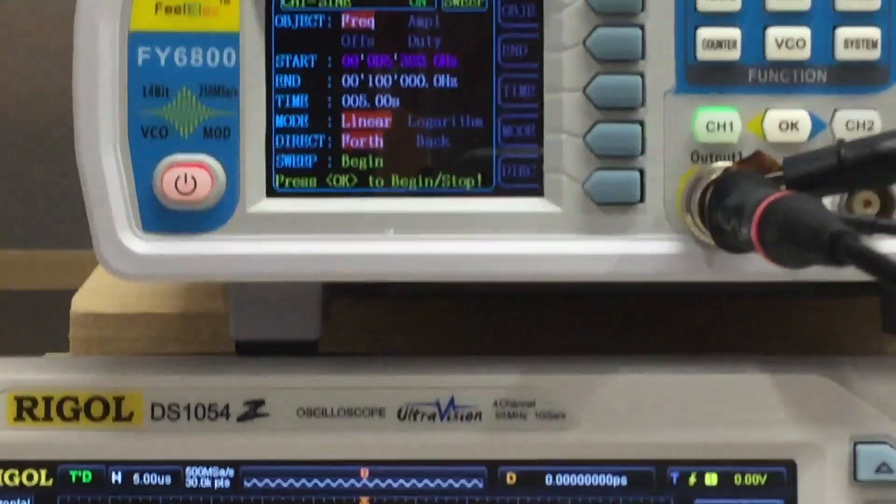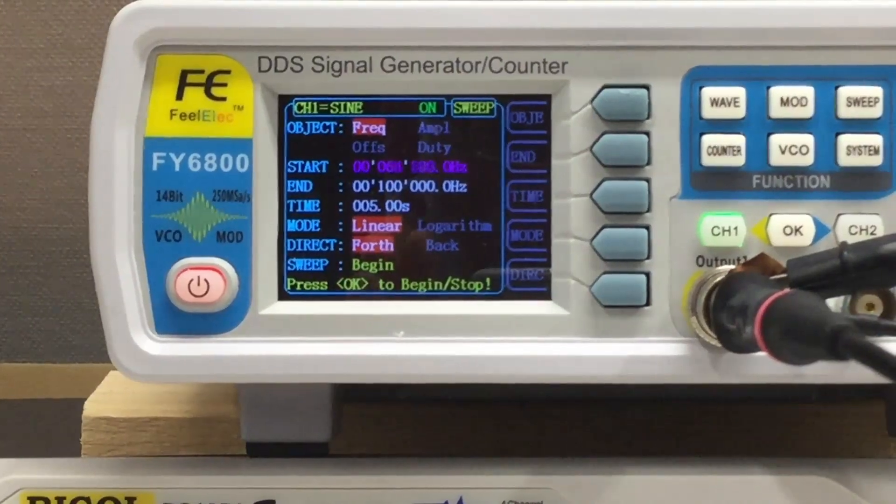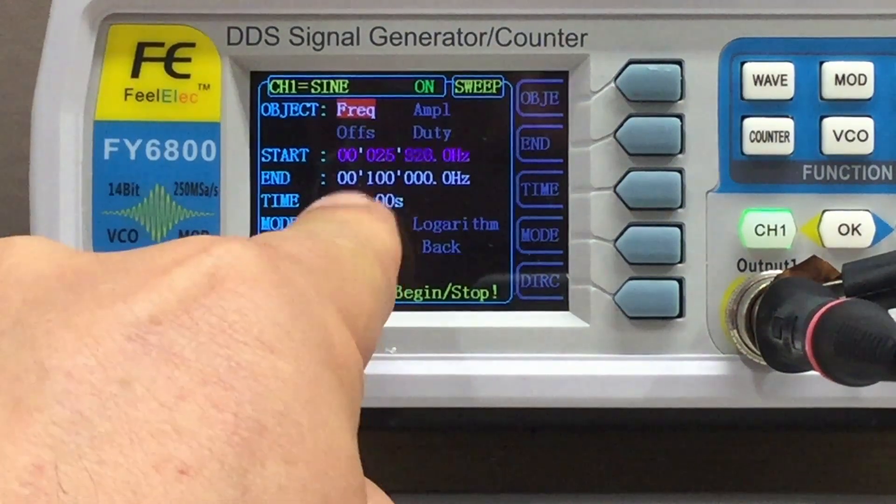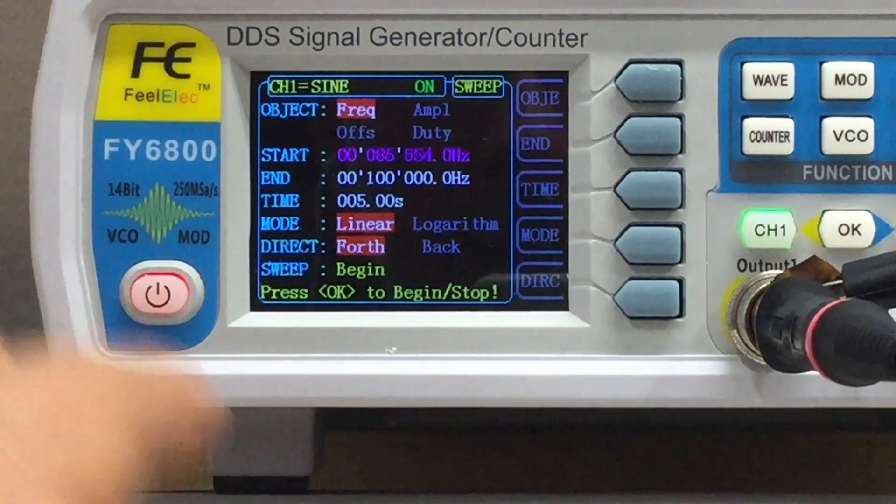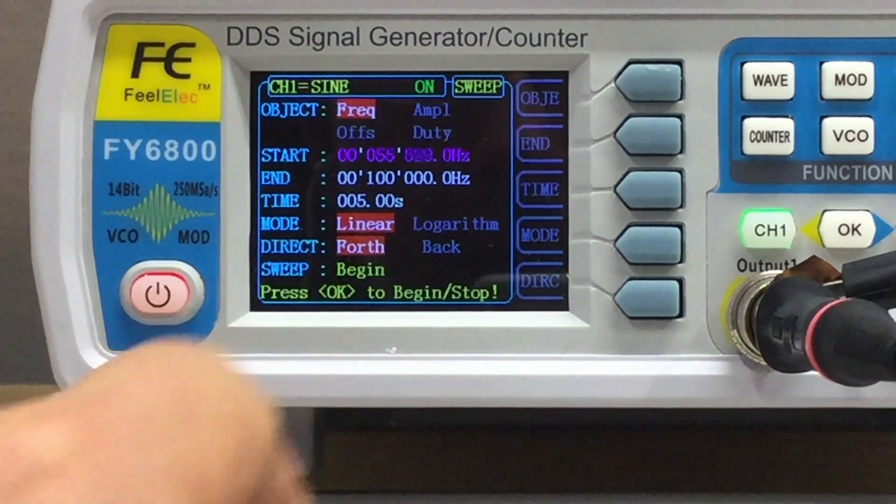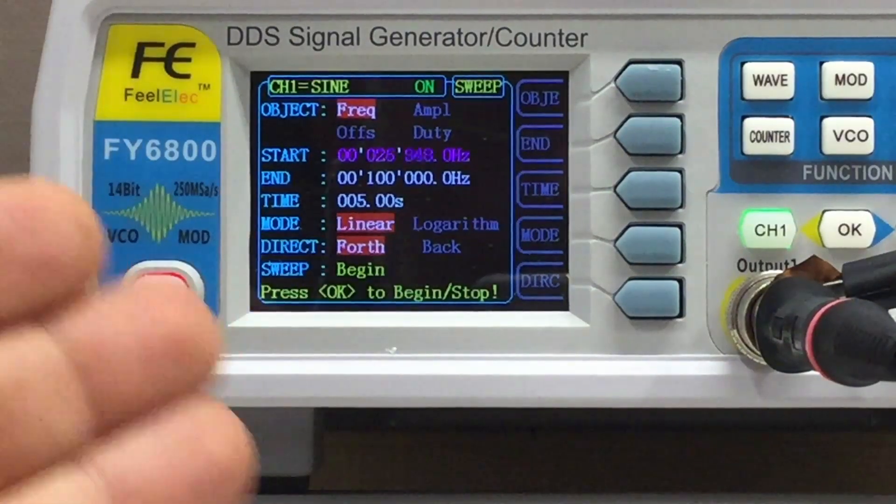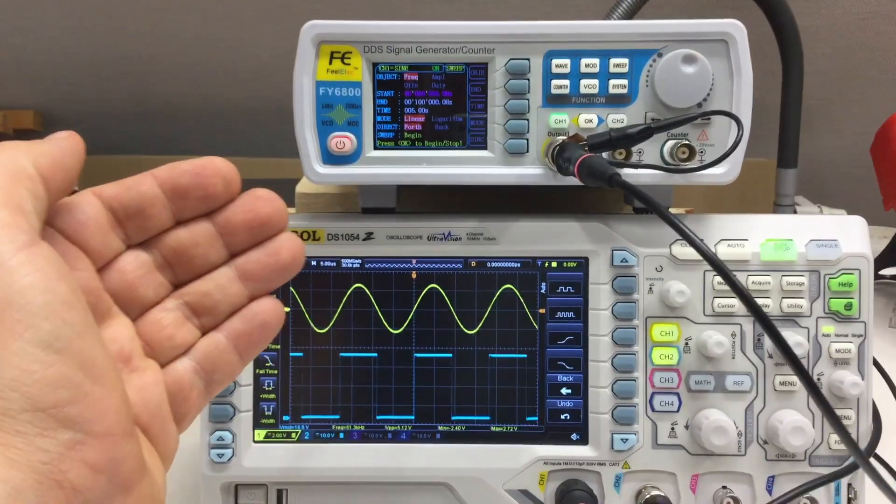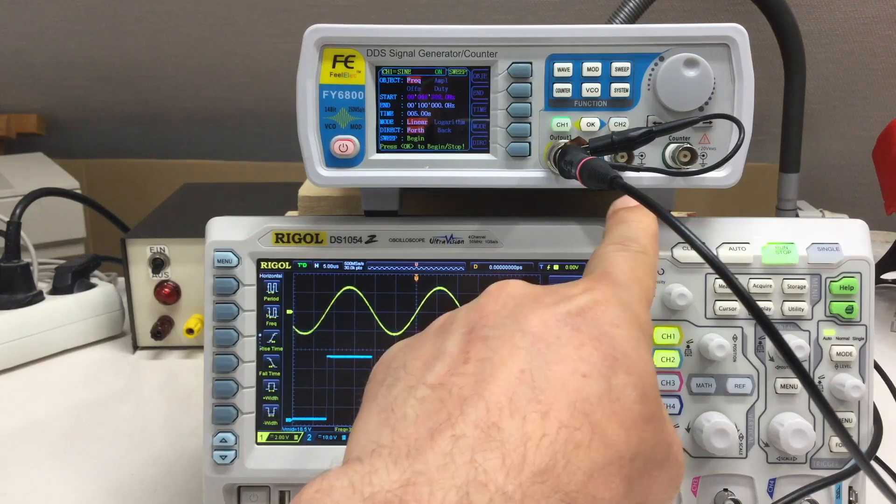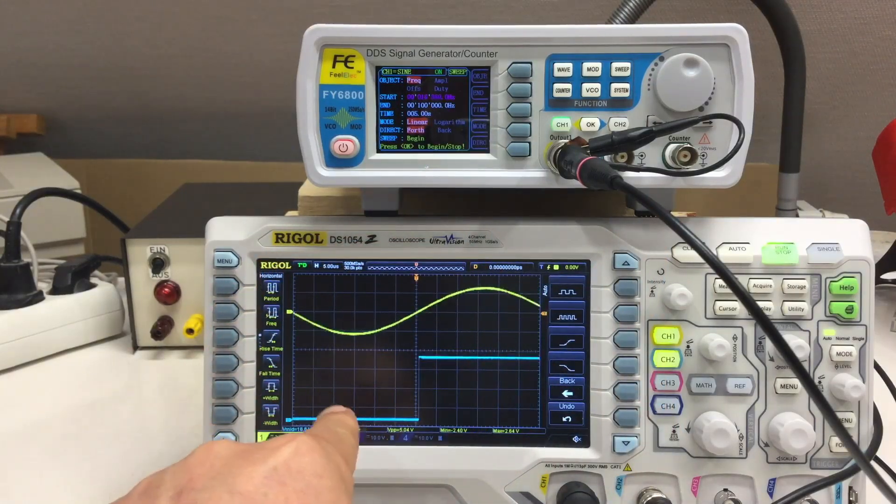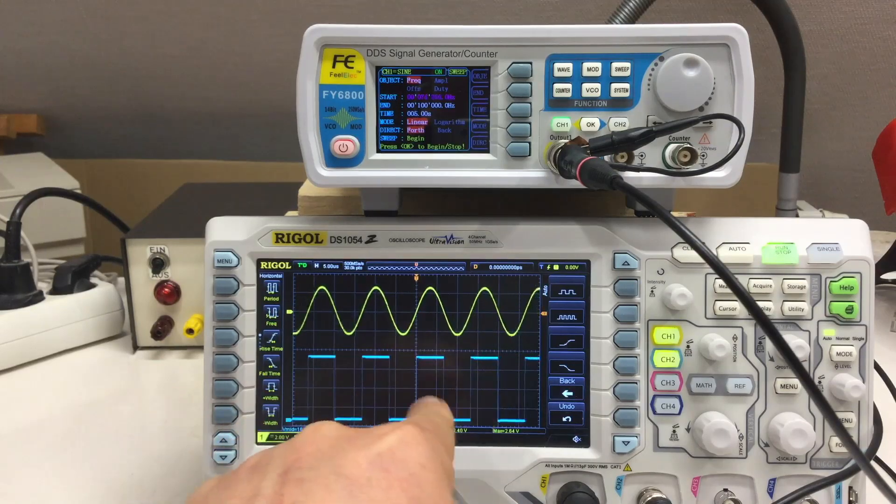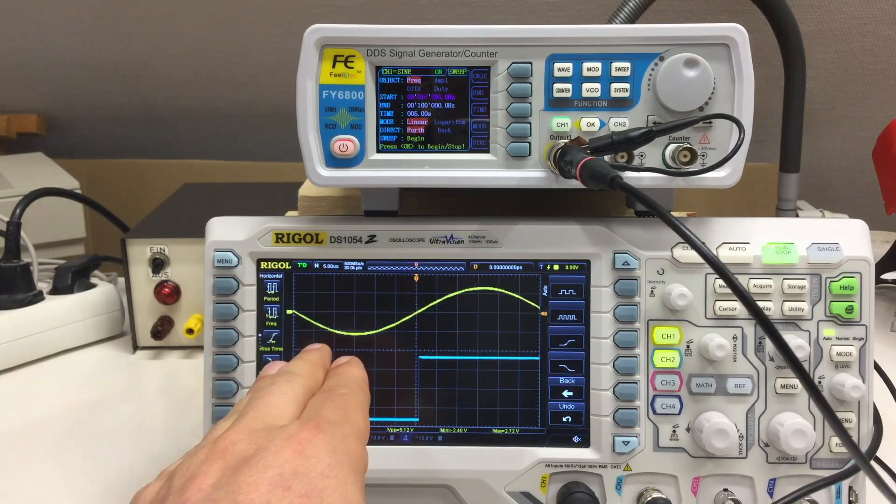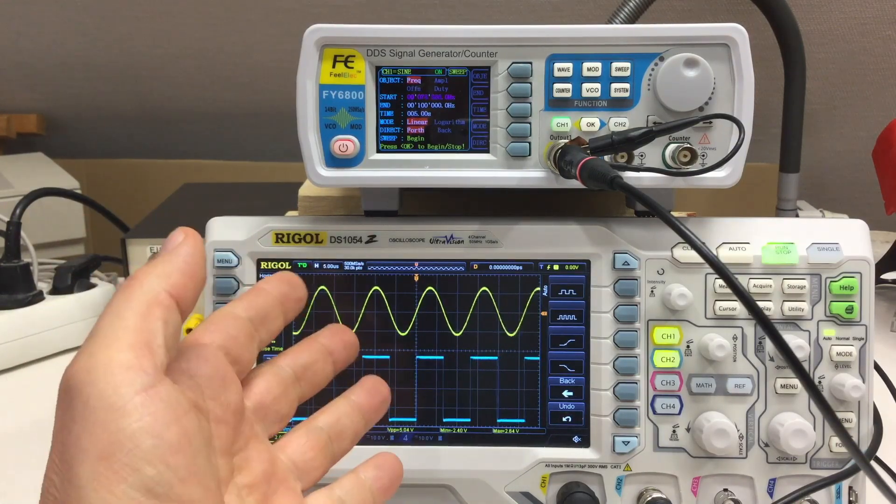On the other hand, these are my sweep settings right now. I'm sweeping over the frequency from 10 kilohertz to 100 kilohertz in five seconds, linear. To answer the question, the sync output at the back of the thing is just providing a rectangular equivalent of the actual waveform output. That's it, sorry, bye.